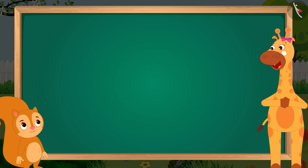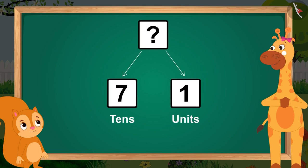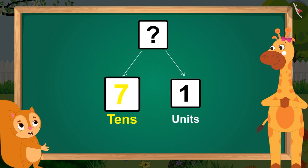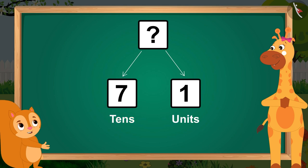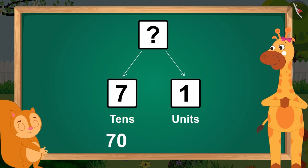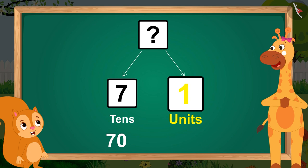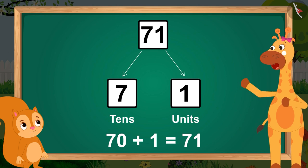Now, I will ask you a tough question. Here, seven is written in the tens place, which means seventy, and one is written in units place, which means one. Seventy and one will make the number seventy-one. Correct answer.